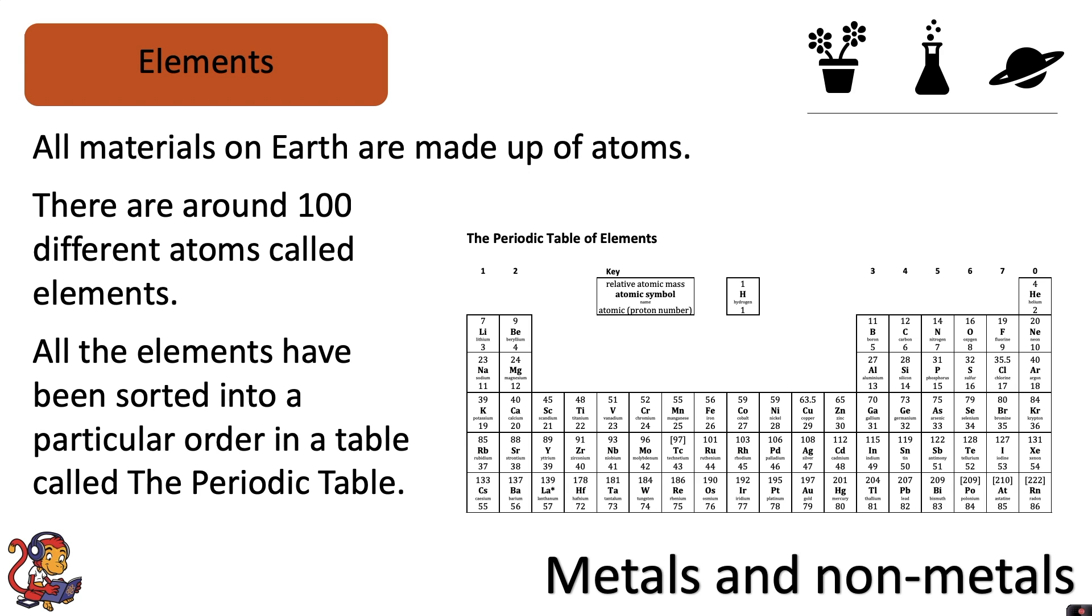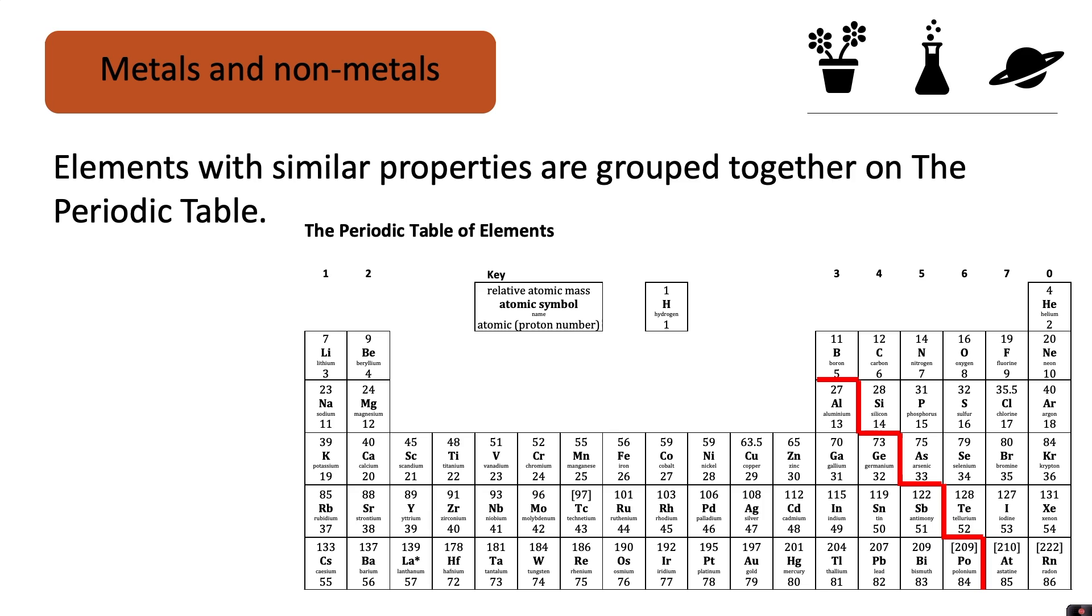All the elements have been sorted into a particular order in a table called the periodic table. Elements with similar properties are grouped together on the periodic table.